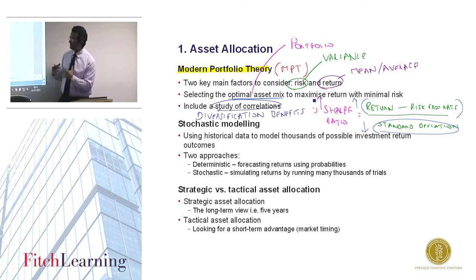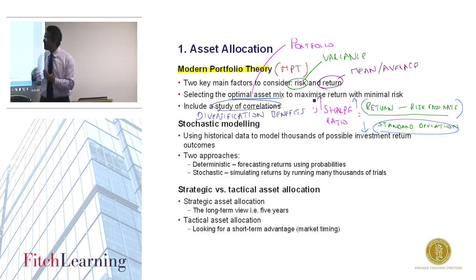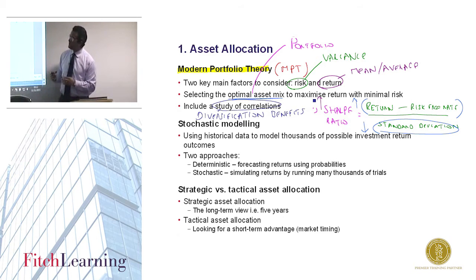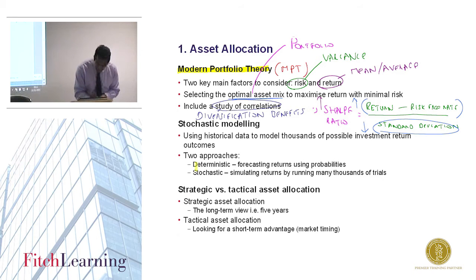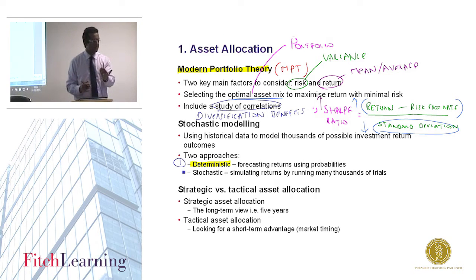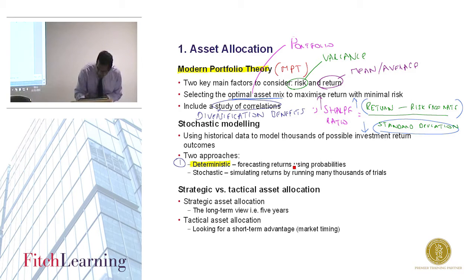Stochastic modeling is where the advisor or portfolio planner tries to assess where investments might be in a year's time — what could the price of a security be? We can use historical data and past performance to model thousands of possible investment return outcomes. There are generally two approaches: first, deterministic modeling, which is forecasting using probabilities. The most typical example is the binomial model, where you suggest two possible outcomes for a price in one year — say a 20% chance of one outcome and 80% chance of another.